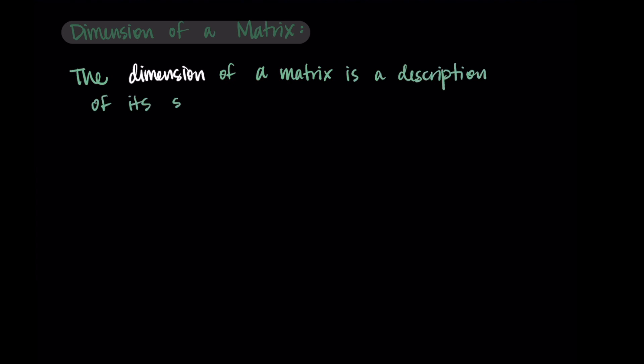So the dimension of a matrix is a description of its size. And specifically, it relates to its number of rows and columns.